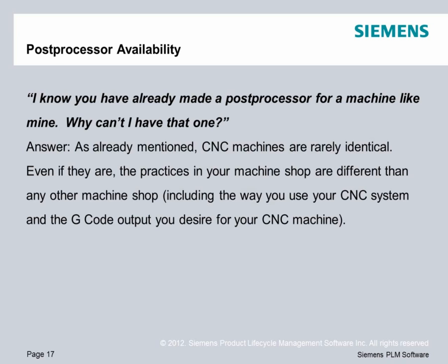'I know you've already made a post-processor for a machine like mine — why can't I have that one?' Well, as we already mentioned, CNC machines are rarely identical. Even if they are, your shop does things differently, especially in NX CAM and CAM Express, which is highly customizable. Your shop may have adopted different practices that will not make this other post-processor work for your shop, so it needs to be modified or customized.